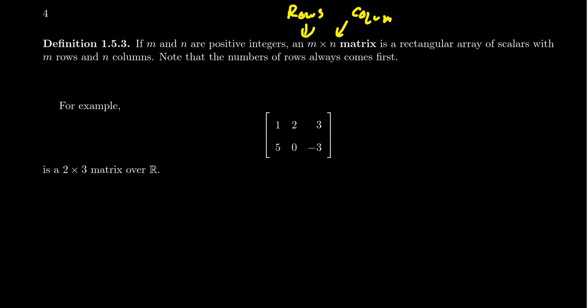When we talk about matrices, we always first mention the rows and then the columns — this is reverse alphabetical order. For example, the matrix with first row [1, 2, 3] and second row [5, 0, -3] has two rows and three columns, so we call this a two by three matrix. That's all there is to a matrix.